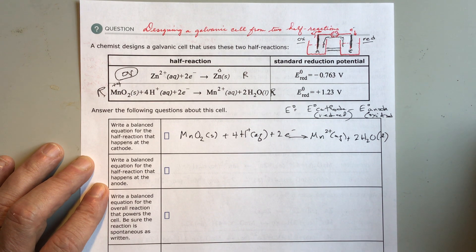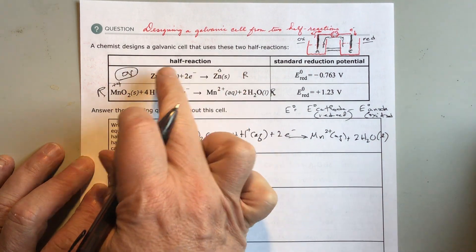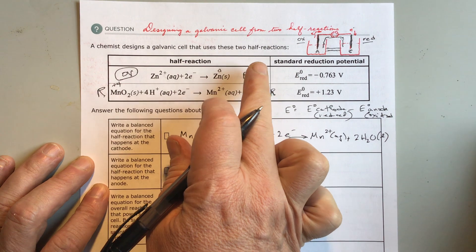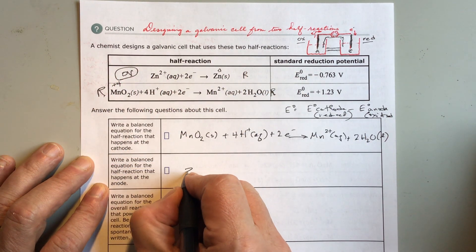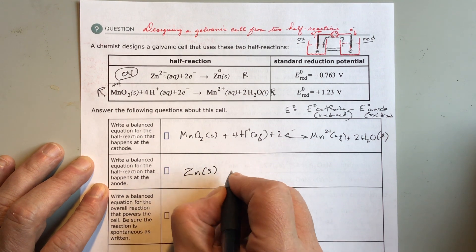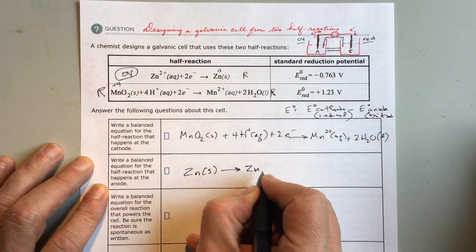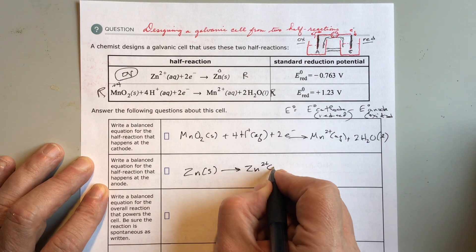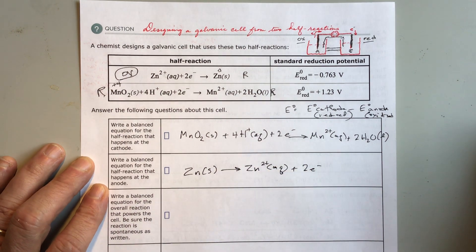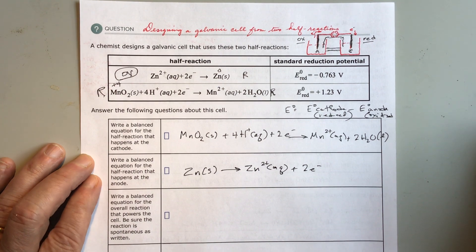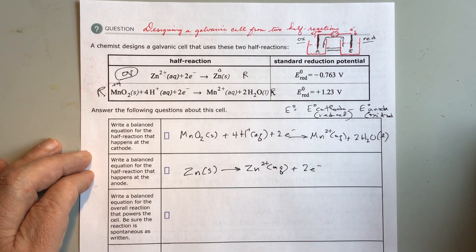This one I'm going to copy, but I'm going to copy it backwards because I don't want the reduction one, I want the oxidized one. I'm just going to write it backwards: Zinc solid yields zinc 2+ aqueous plus 2 electrons.